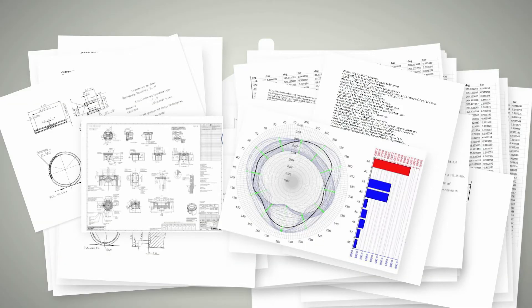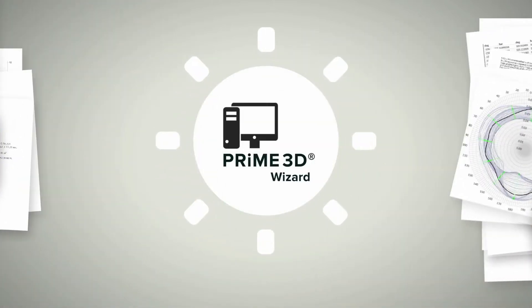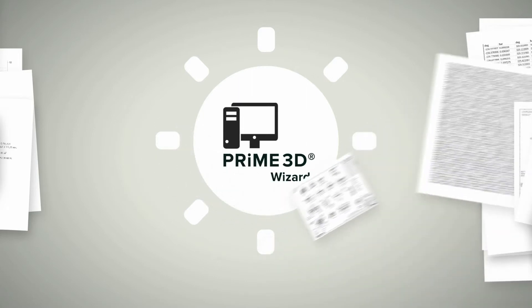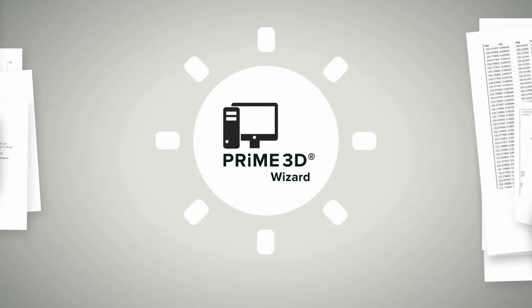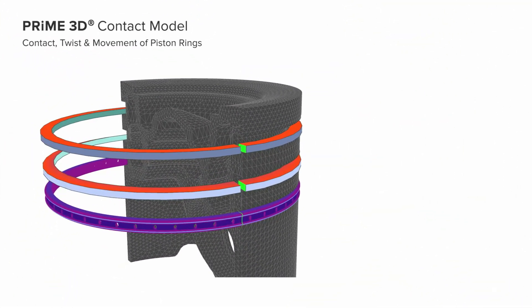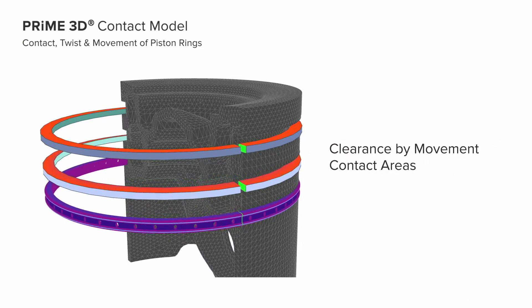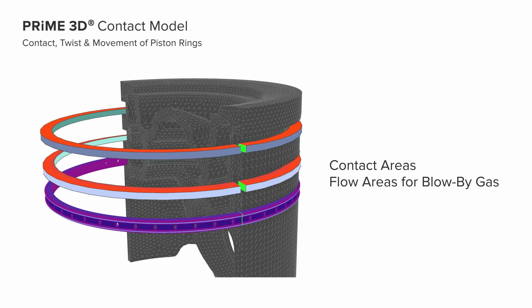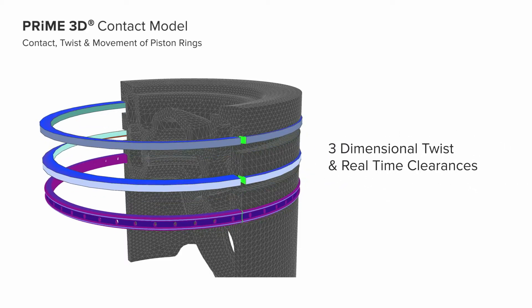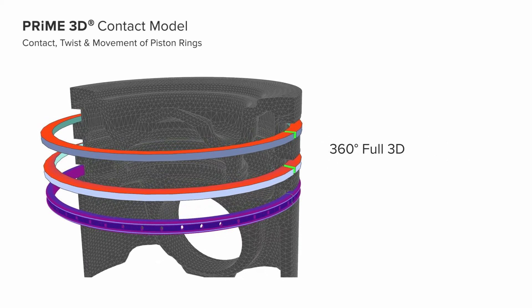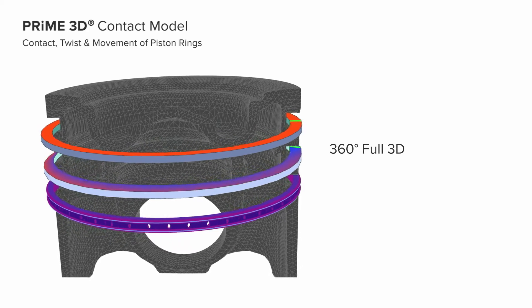Prime 3D simulates real engine operating conditions without any additional calibration required. Necessary information can be simply transferred from the design drawings using the drag-and-drop functionality offered by the Prime 3D Wizard. The software calculates the optimal solution based on gas flow physics and the behavior of the power cylinder unit. The results offer a clear vision of necessary design changes at the early stages of component development, enabling a significant reduction of engine development time and cost.